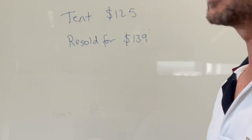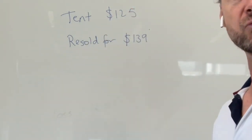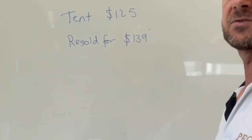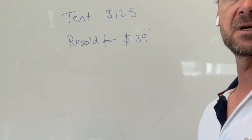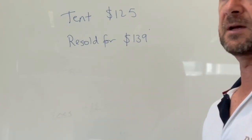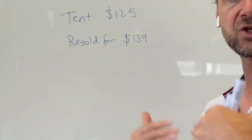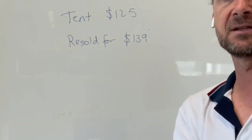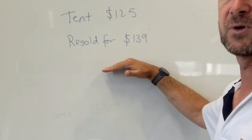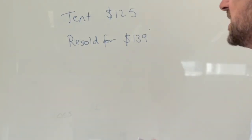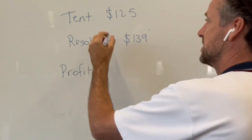In this next example, someone purchased a tent for $125 and then resold it — probably still as a new product. People who do this are called flippers: they buy something and sell it immediately, not to use it but to resell it for profit. He's probably found this tent underpriced and knows he can sell it for a profit margin.